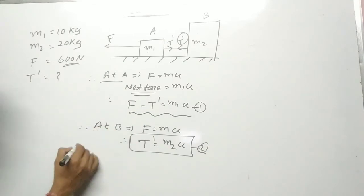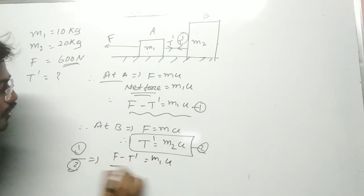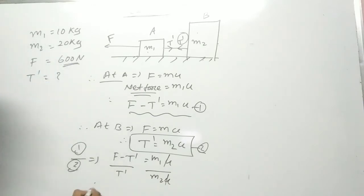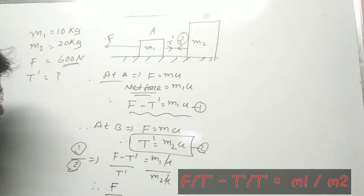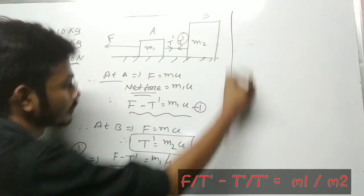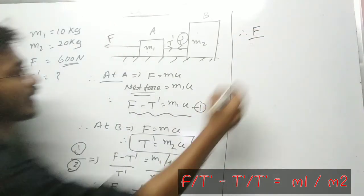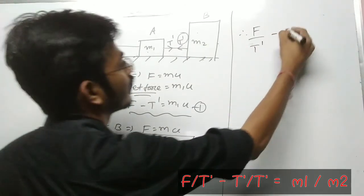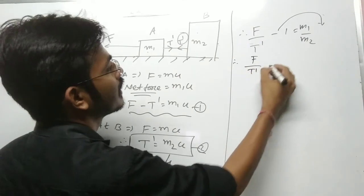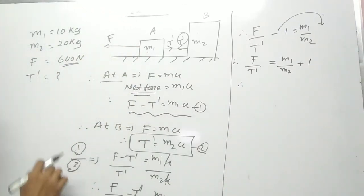Now take the ratio of equation one divided by equation two: (F minus T dash) divided by T dash = m1 a divided by m2 a. The acceleration cancels out. Splitting: F/T dash minus 1 = m1/m2. Therefore F/T dash = m1/m2 + 1.